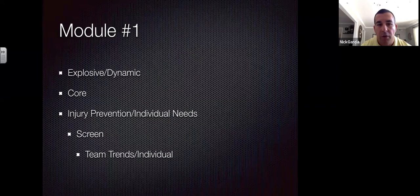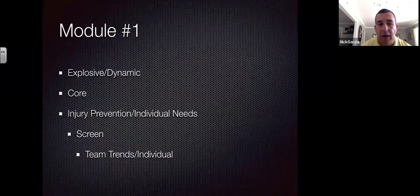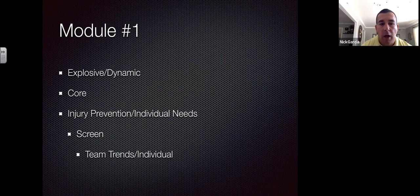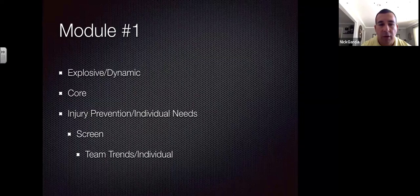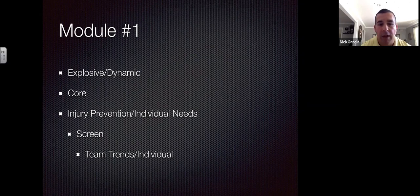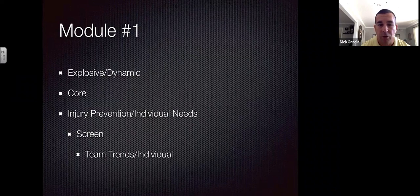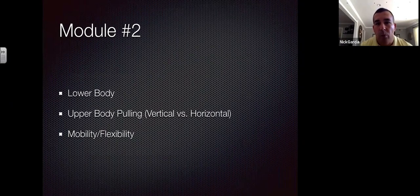The third element of module one is injury prevention or individual needs. I screen all athletes, look at team trends, and if there's a common deficiency we attack it as a team. Individuals with specific needs get addressed at the same time with a special training plan. So the injury prevention work is based off screening and team trends — a concept Shannon Turley taught me.